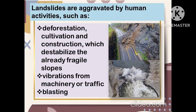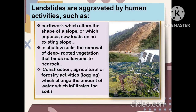Landslides can also be aggravated by human activities. The first is deforestation, cultivation, and construction, which destabilize already fragile slopes. The second is vibration from machinery or traffic, and the third is blasting. Another human-aggravated cause is earthwork, which alters the shape of a slope or imposes new loads on an existing slope. In shallow soils, the removal of deep-rooted vegetation that binds colluviums to bedrock is also a factor, as is construction, agricultural, or forestry activities — such as logging — which change the amount of water that infiltrates the soil.